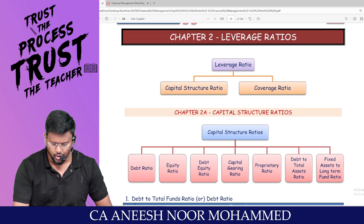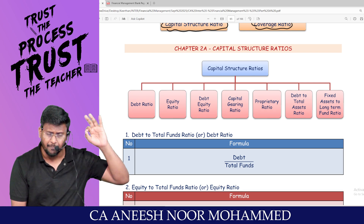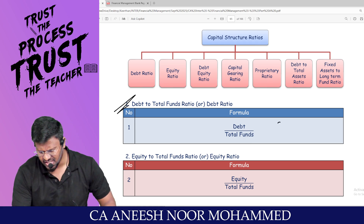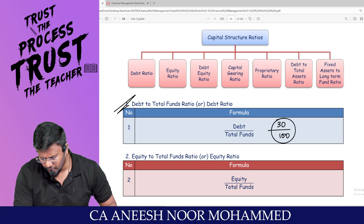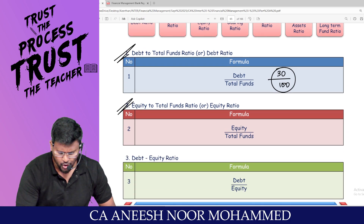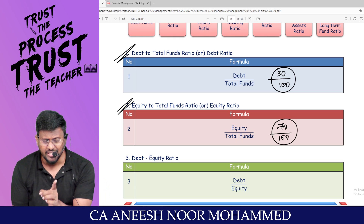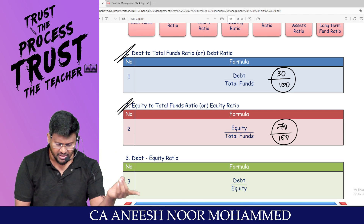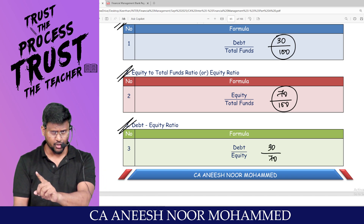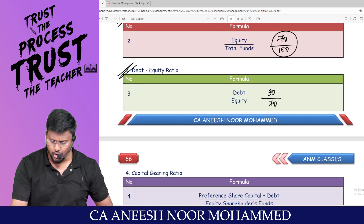Moving to capital structure ratios, which deal with the liability side of the balance sheet. Debt ratio equals debt divided by total fund — for example, 30 rupees debt out of 100 rupees total fund means 30% debt ratio. Equity ratio equals equity divided by total fund — the balance 70 rupees. Debt-equity ratio equals debt divided by equity, which is 30 divided by 70.